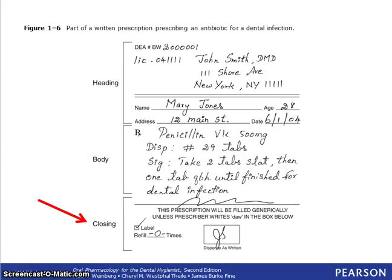In the closing, you see the signature of the prescriber and refill information, which says refill zero times. The closing would also include any additional labeling instructions for the box or bottle, and it would also say DAW or substitution permitted. You can see that in this sample there's a box that was initialed and it says dispense as written below it. The prescriber's DEA number is included in the heading in this example rather than the closing — that can be done in either location.